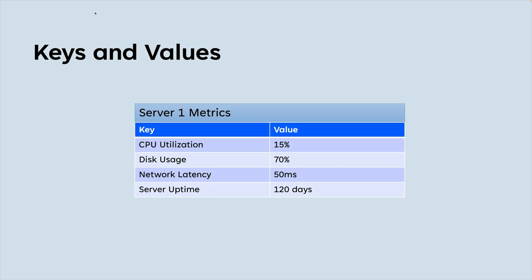Let's say that I have a server that I need to monitor and I'm collecting some information on the server. Maybe I have an application that's running there, I'm collecting this information and I can read it out on the command line. So the application is collecting the CPU utilization, the disk usage, network latency, how long the server's been up. This is stuff that when I run the application on that server, I can get spit out on the command line. But I don't want to have to log in and run this application every time I want to see what's currently happening on that server.